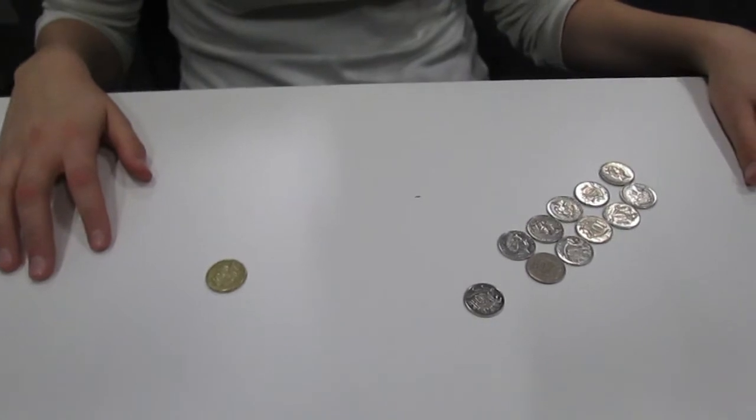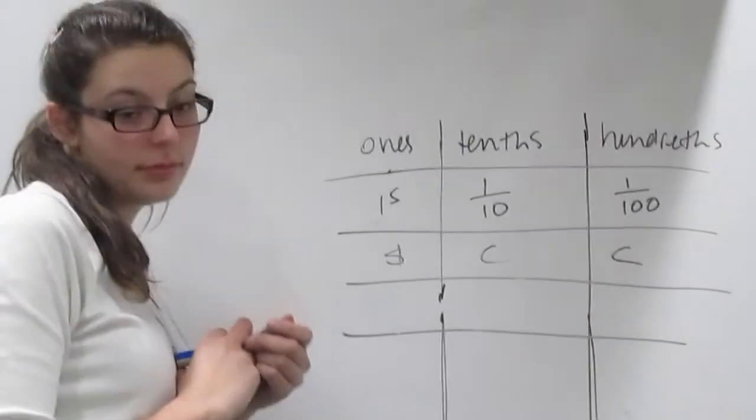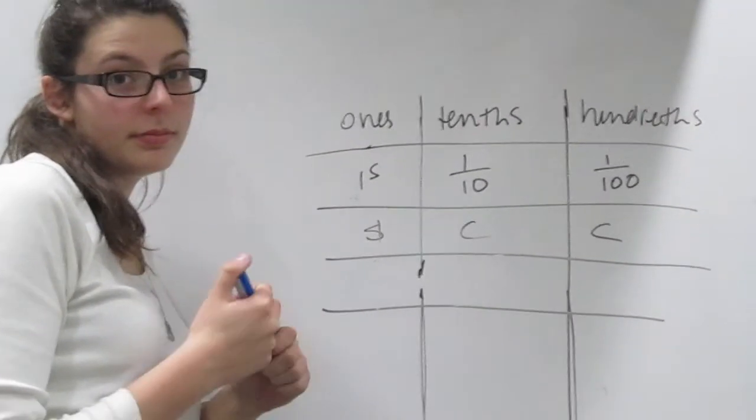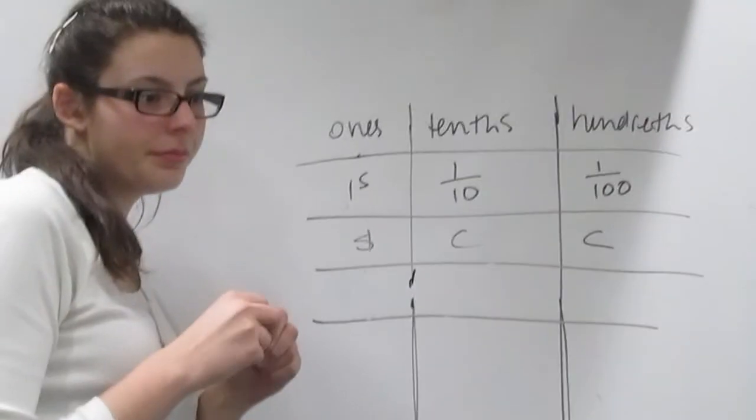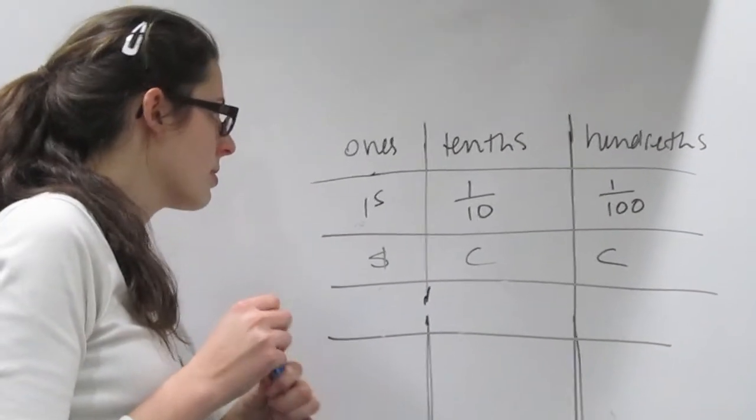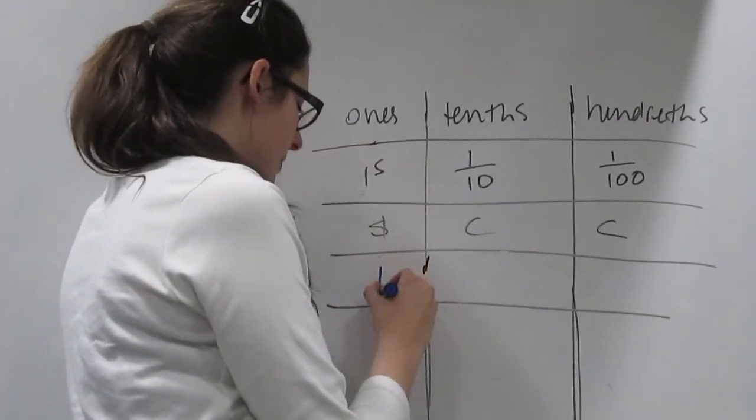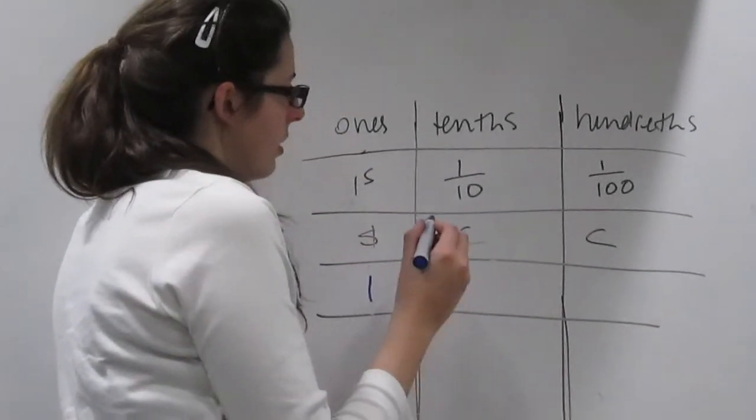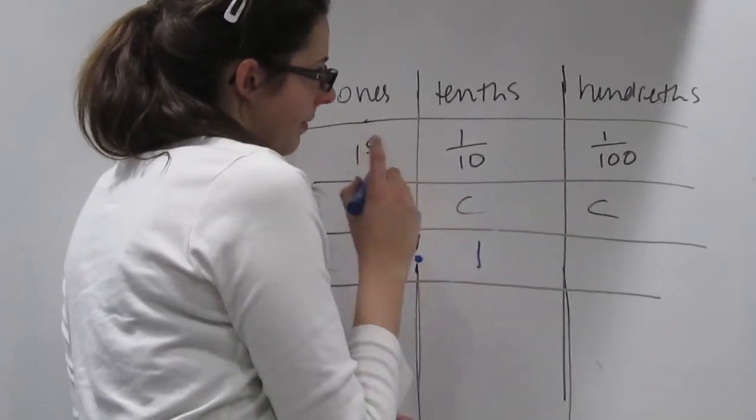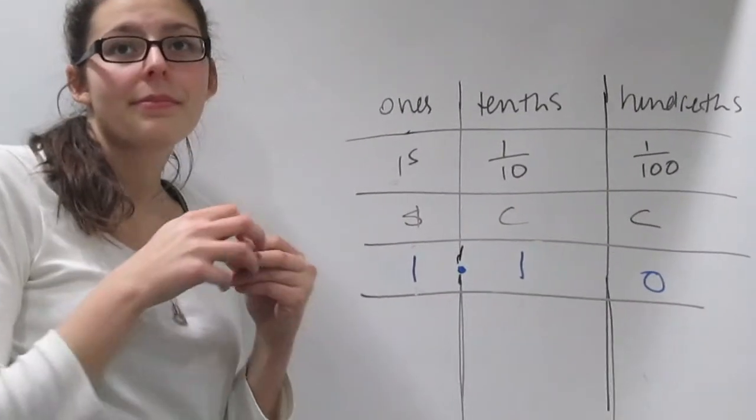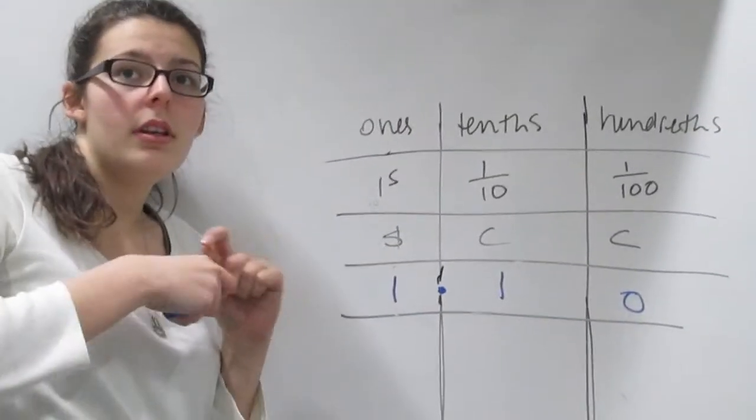So let's look at how we can relate this to the place value chart. We also looked in money amounts what made up a dollar ten before. So could you just write that in the place value chart as well, please? Fantastic. So can you tell me why you wrote it like that?